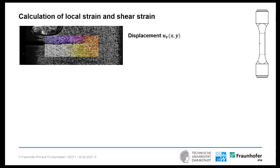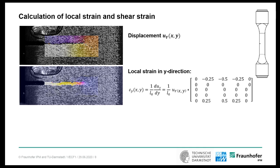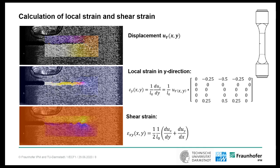Local strain and shear strain are calculated from the displacement. Here you see the displacement field in y-direction of a corner crack sample. Above the crack, you have low displacements and below, you have large ones. Local strain is calculated as a convolution between a Sobel operator and the displacement field, and it's divided by the diameter of the Sobel operator, which is four regions of interest here. Similarly, you can calculate shear strain. In shear strain, you see a maximum above the crack tip and a minimum below.